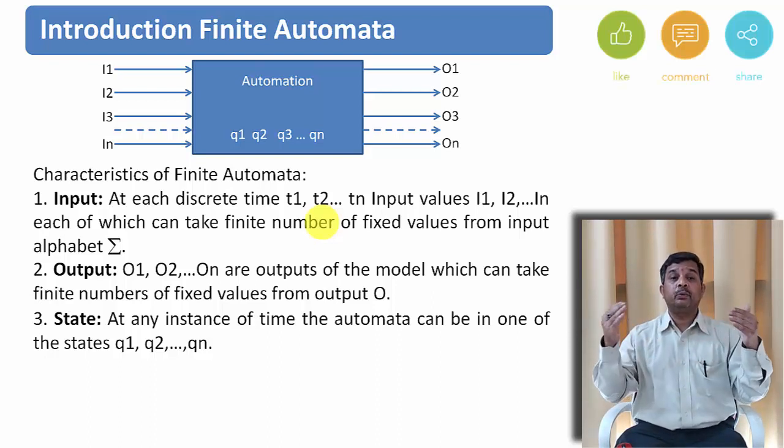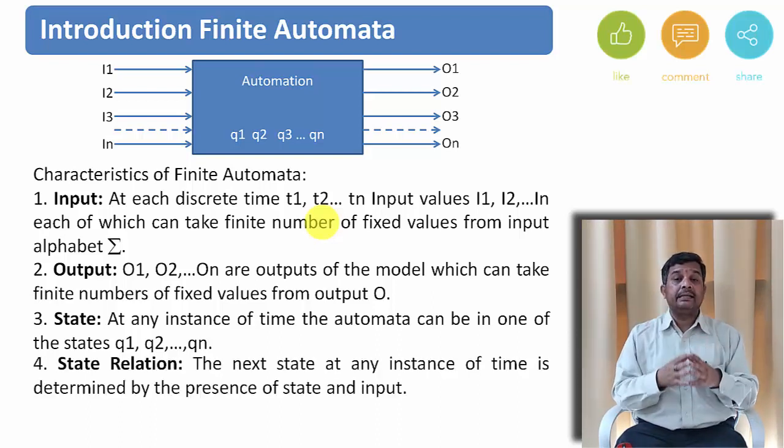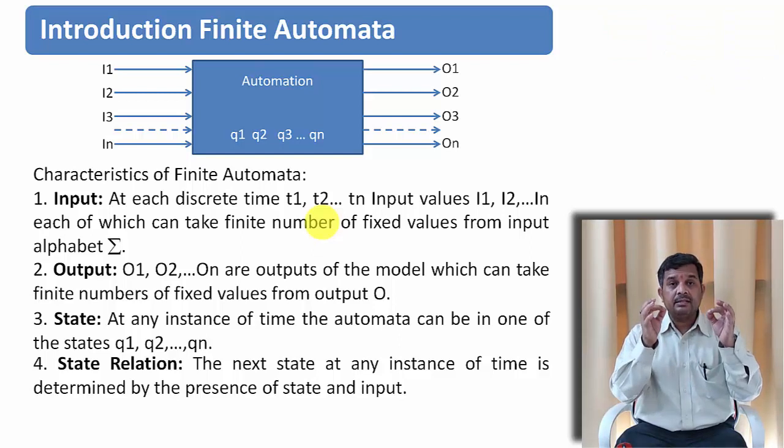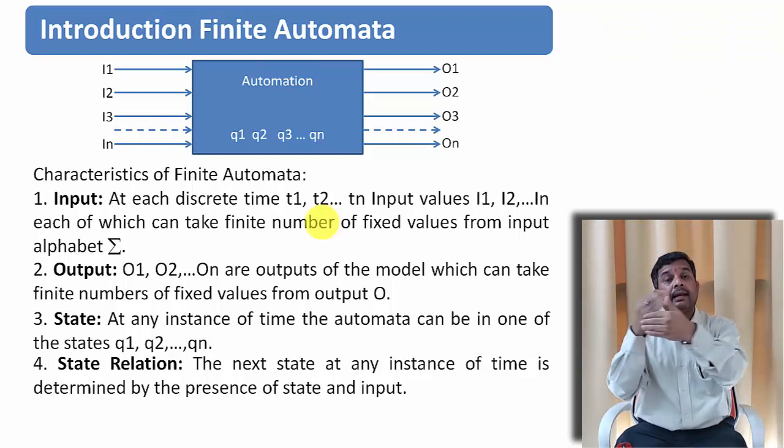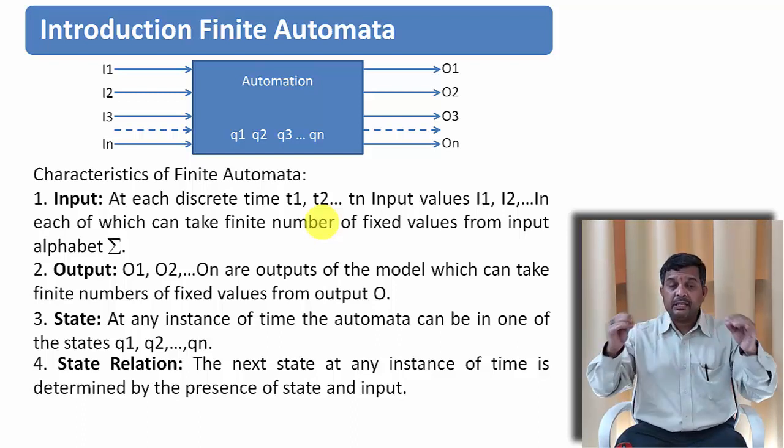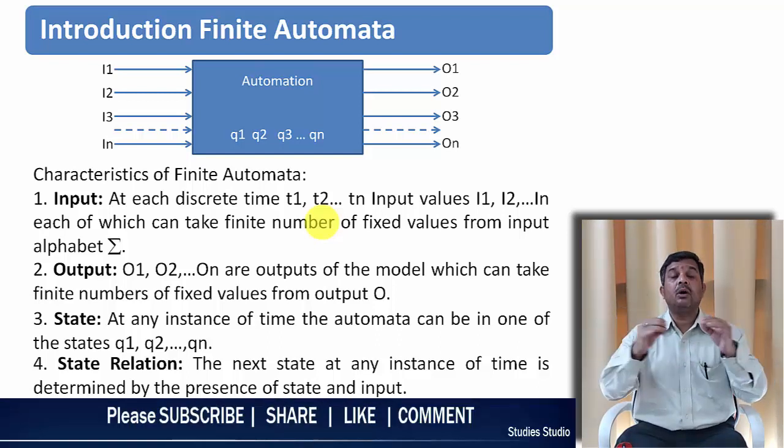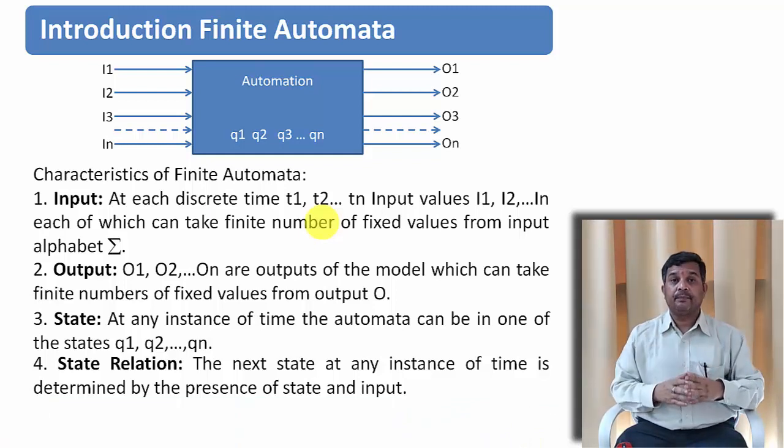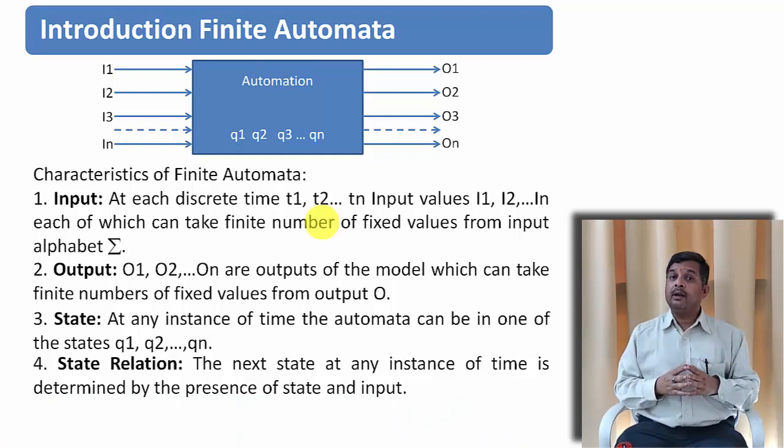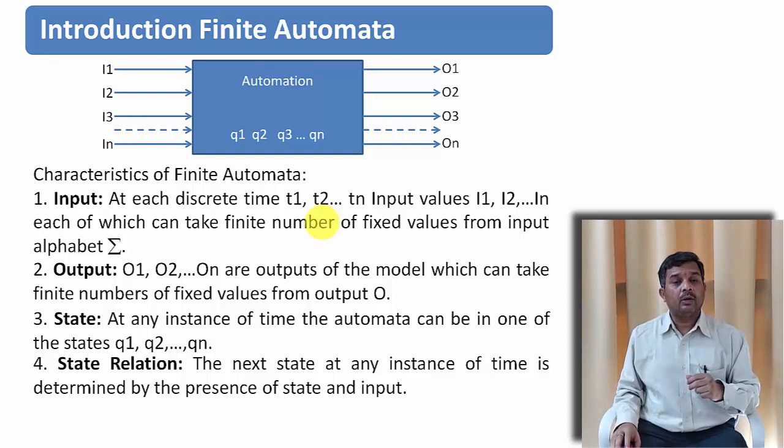Next, the relationship between the states. As we have already discussed, state is nothing but an instance of time. How from one state will I get the other state? So there must be some kind of transition or some kind of relation based on which the state will change. That is also required in order to define a finite automata.